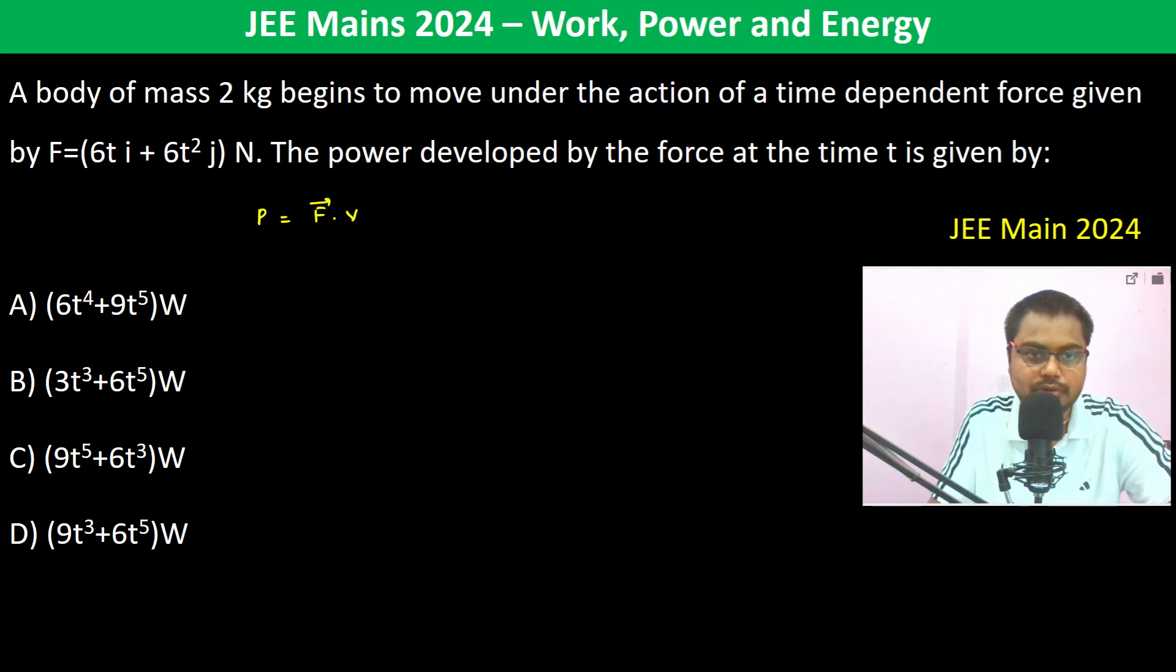And this is dot product, so F dot V. We have to find at time T, so therefore F is given but V is not given. But since F is given and mass is given, we can find out the acceleration.